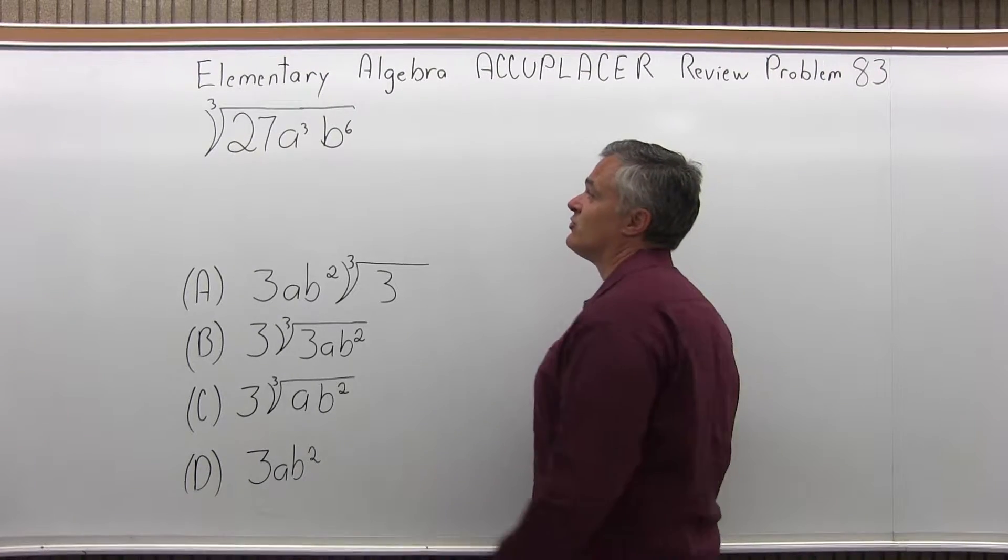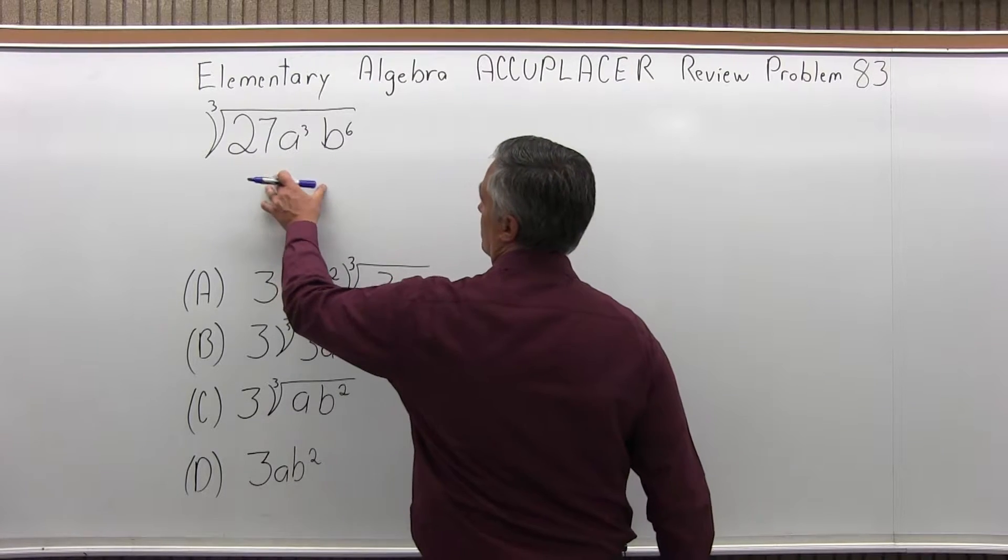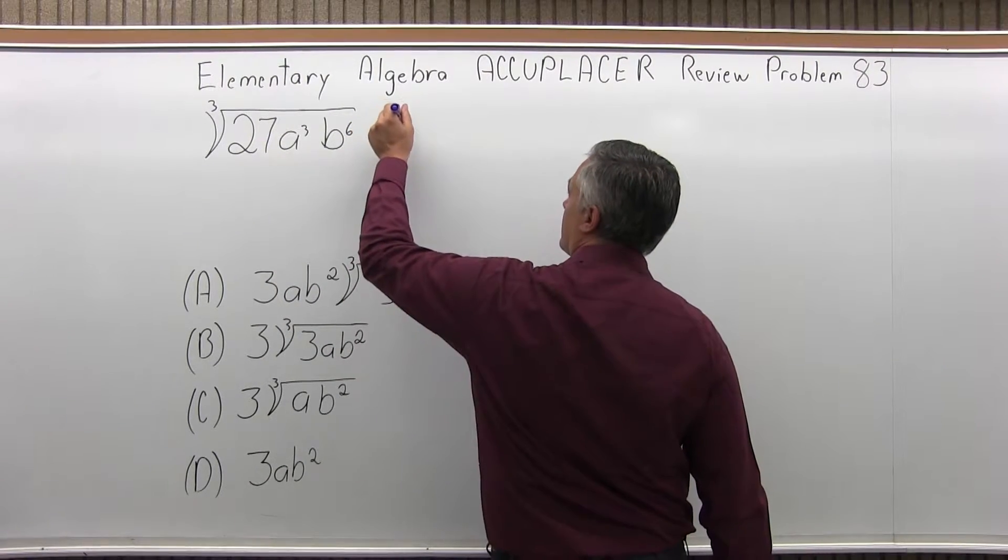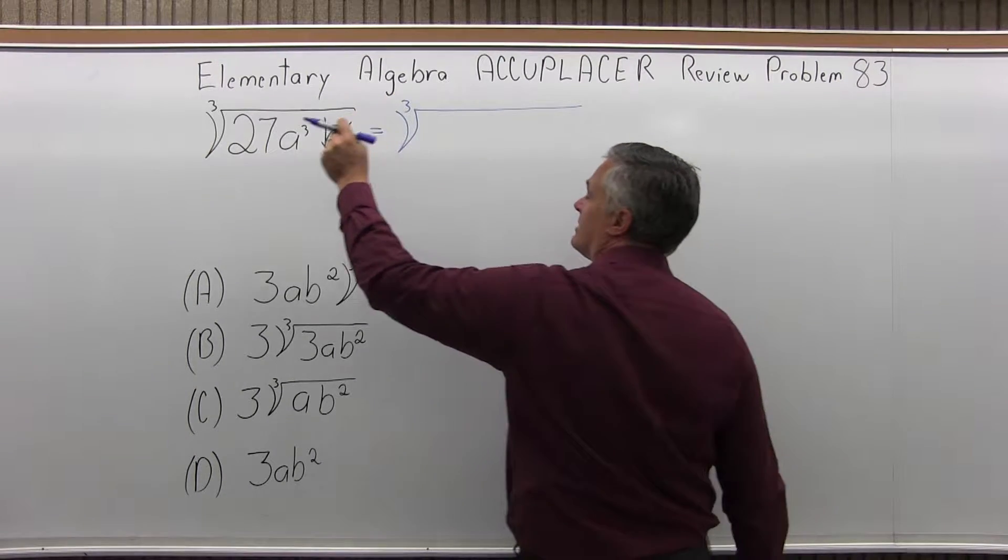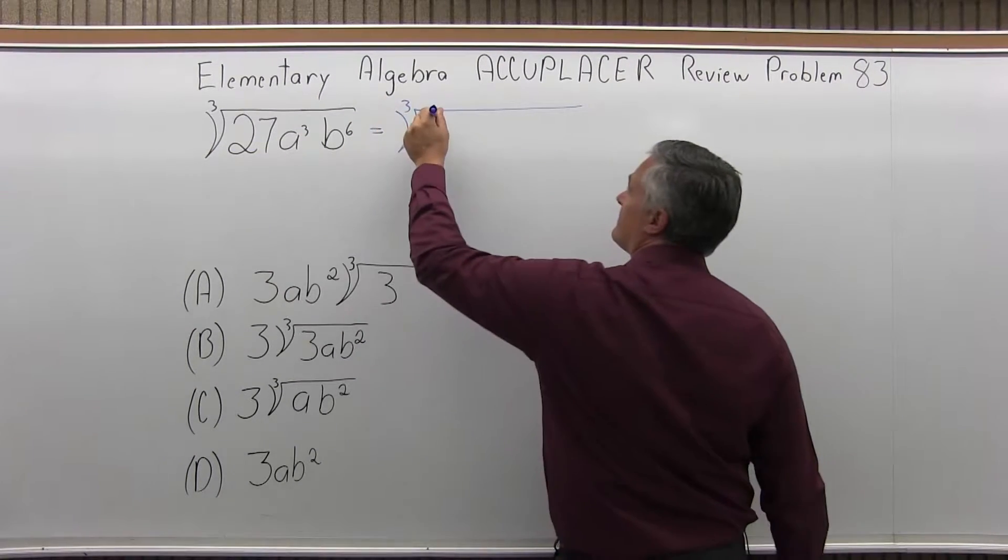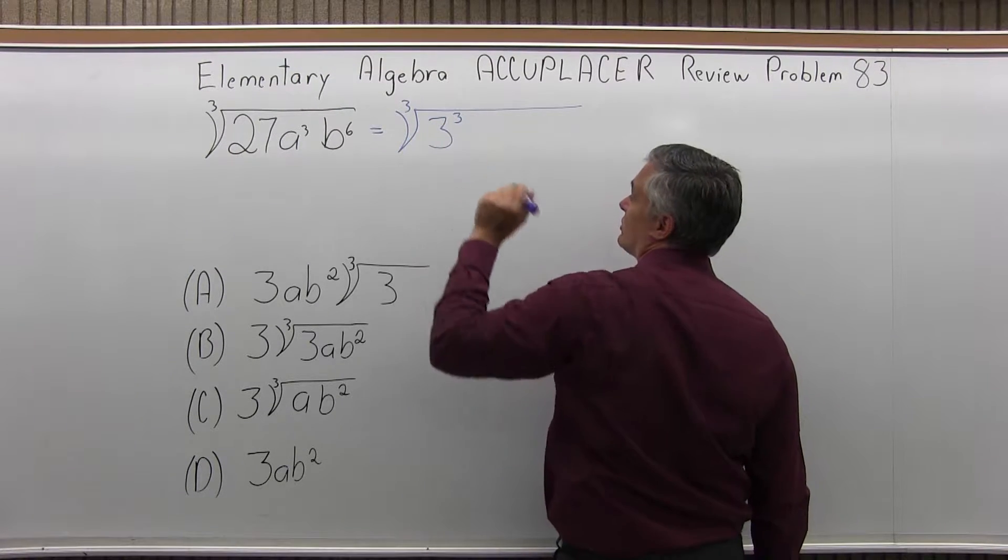The key to this is to rewrite the value under the cube root. Let me keep the cube root but I'm going to write things a little bit differently. 27 is 3³.